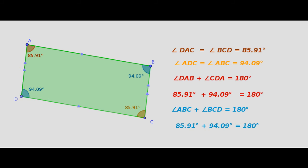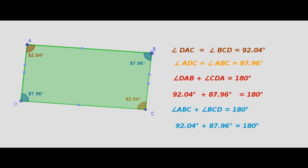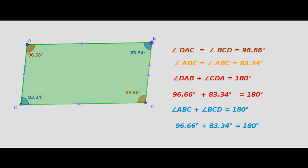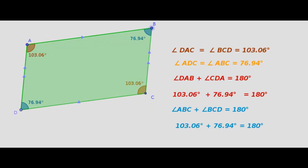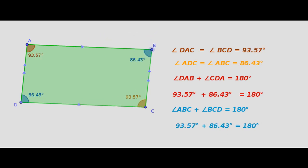One more property is that the sum of any two adjacent angles is 180 degrees, meaning any two adjacent angles are supplementary to each other. Here, angle A plus angle D is equal to 180 degrees, and angle B plus angle C is equal to 180 degrees. We may visualize that this is true for different measurements as well.